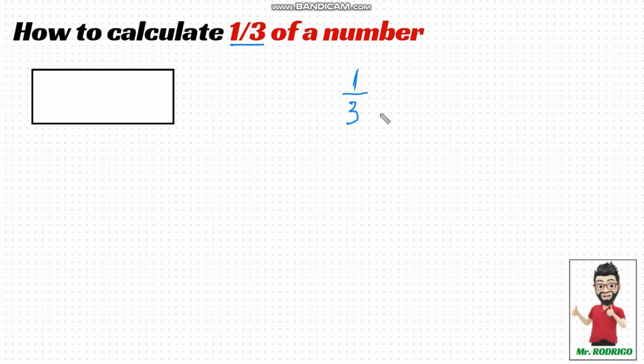To calculate one-third of a number, you simply take the number, divide it into three equal parts, and then take just one of those parts.